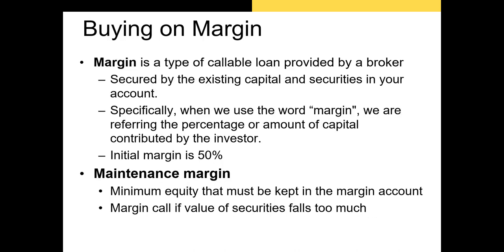Now let's talk about buying on margin. Margin is a callable loan provided by a broker — you can borrow up to a certain limit in order to buy more securities. You pay your broker an interest rate plus a service fee; the interest rate is relatively low. The loan is secured by the assets in your brokerage account. Going forward, I'll refer to margin as the percentage of capital contributed by you — your own personal equity in your brokerage account.